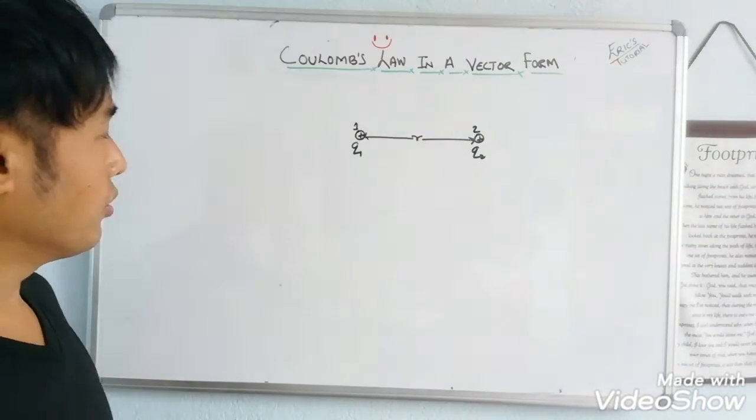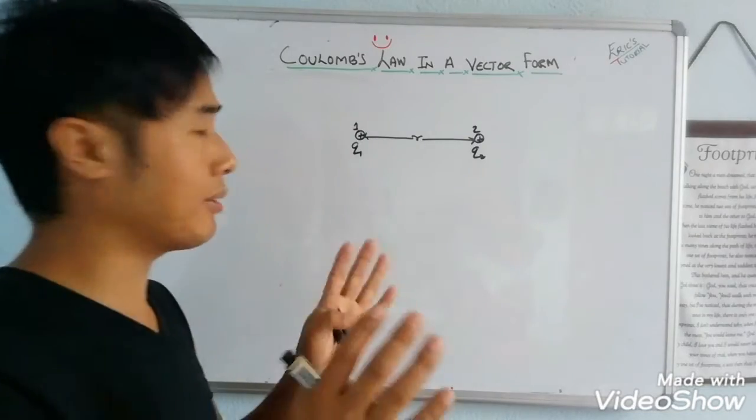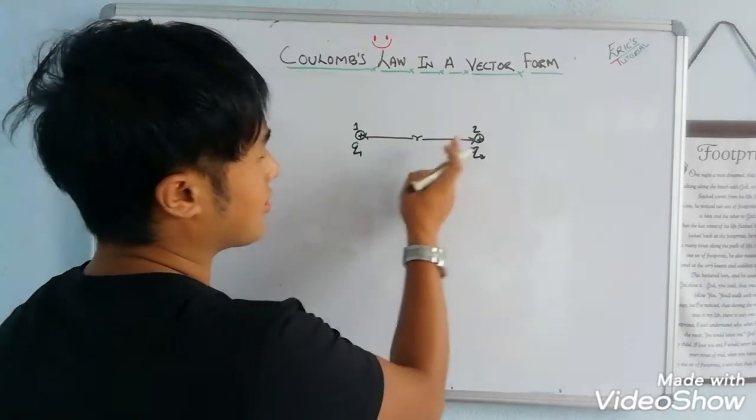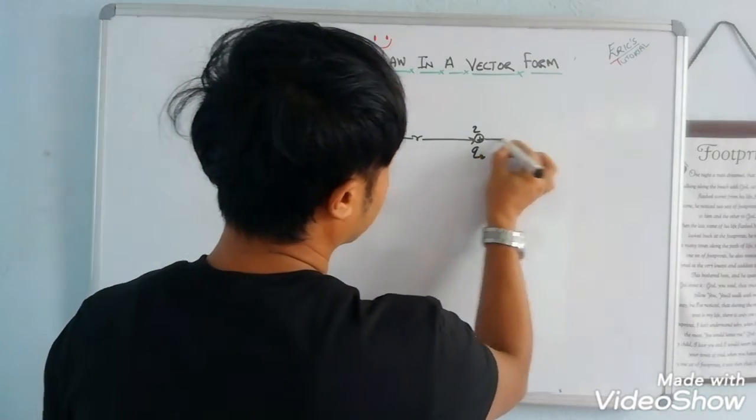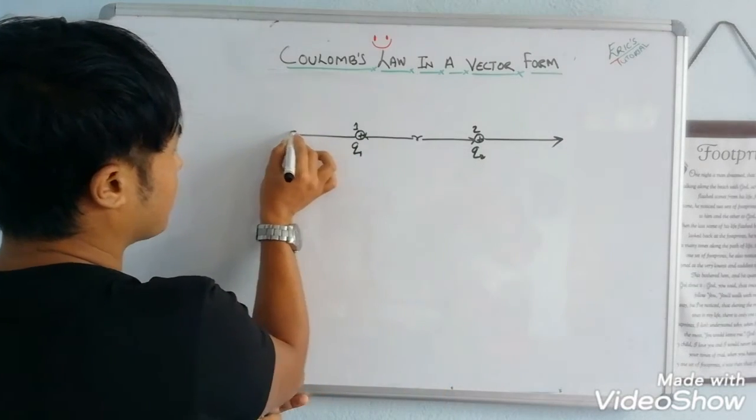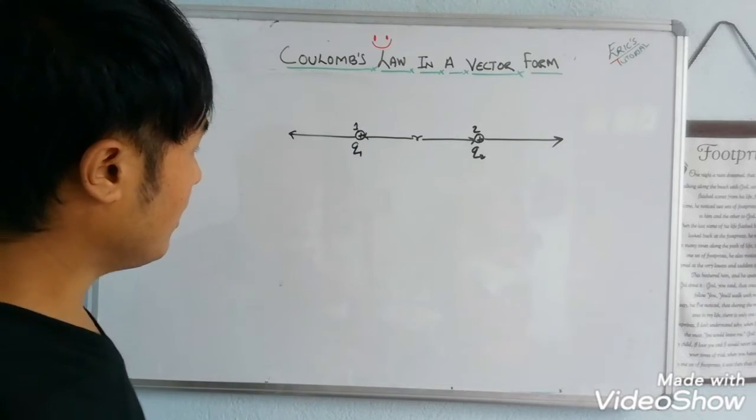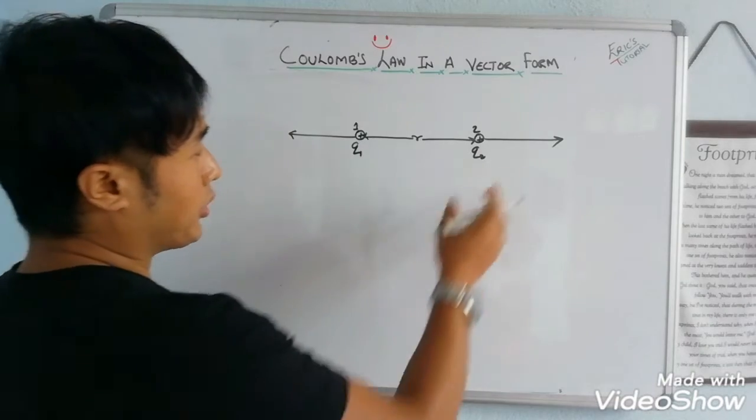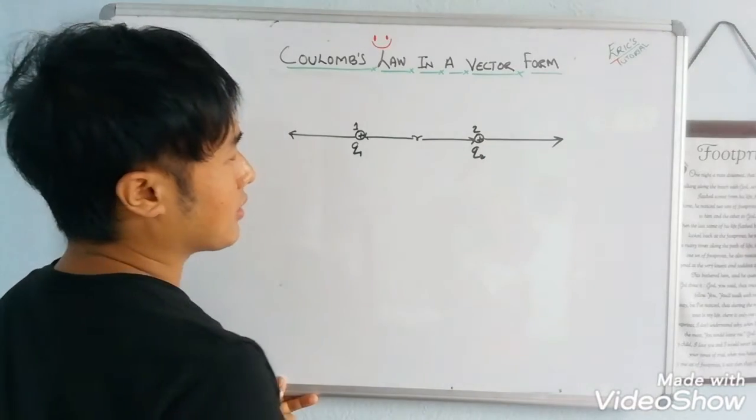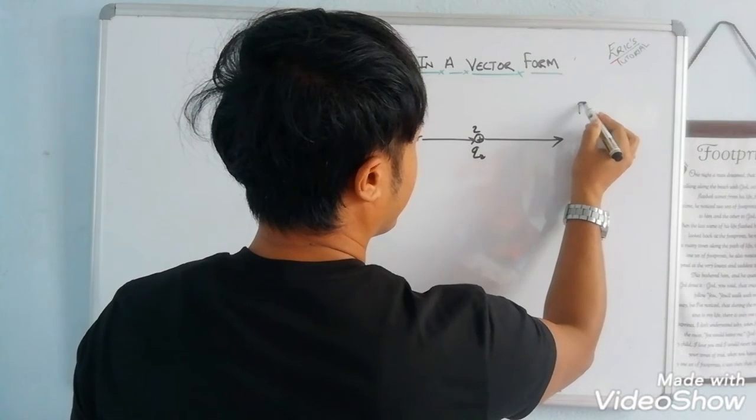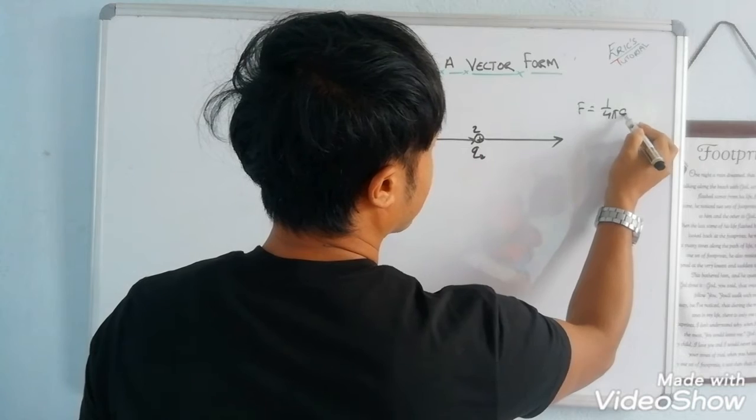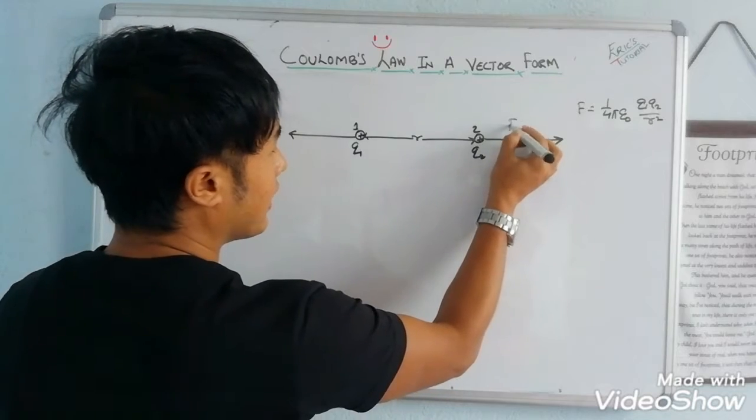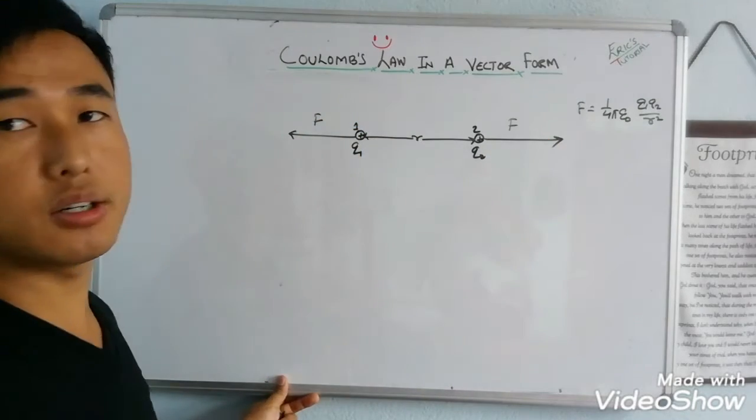Okay, what we know is whenever two like charges are kept at a certain distance, these two charges will repel each other. These repulsive forces are in the opposite direction. But Coulomb's law is given by, force magnitude is given by F equals to 1 by 4πε₀ q1q2 by r square.